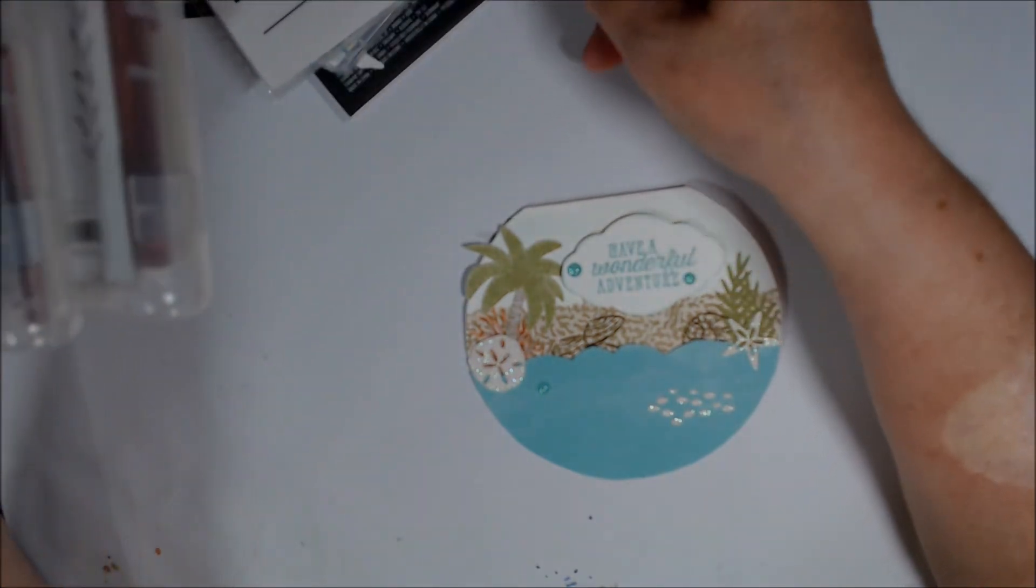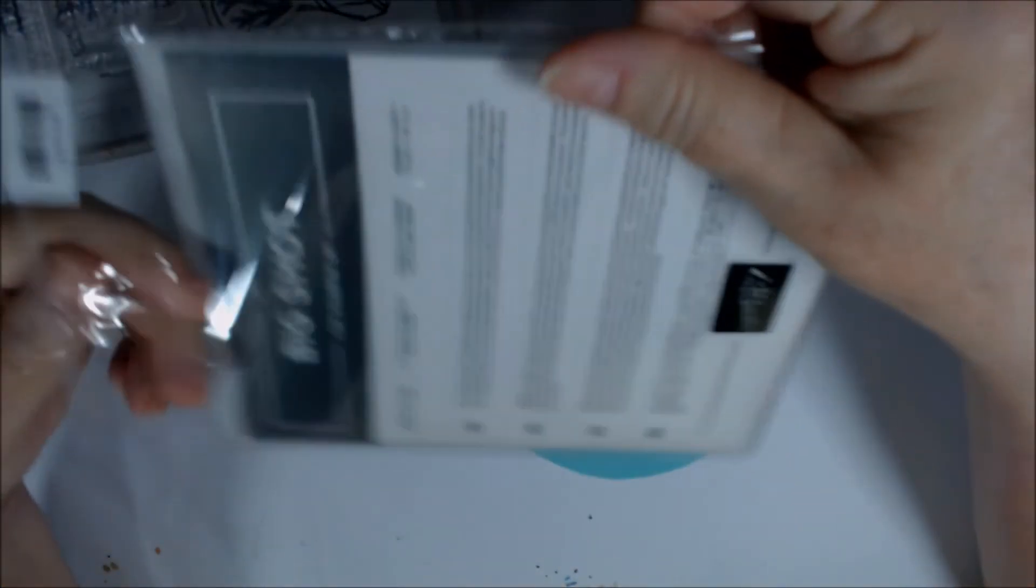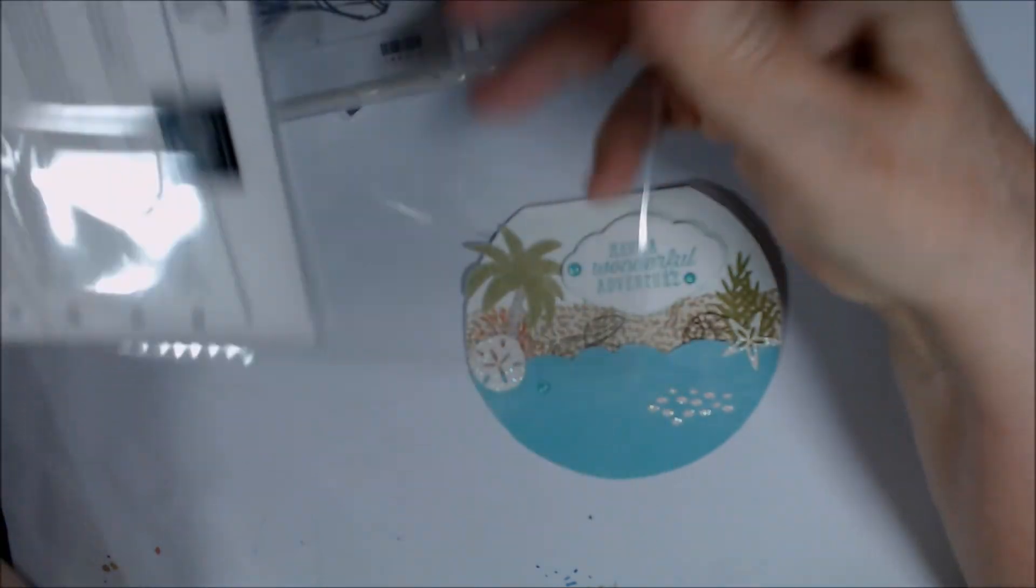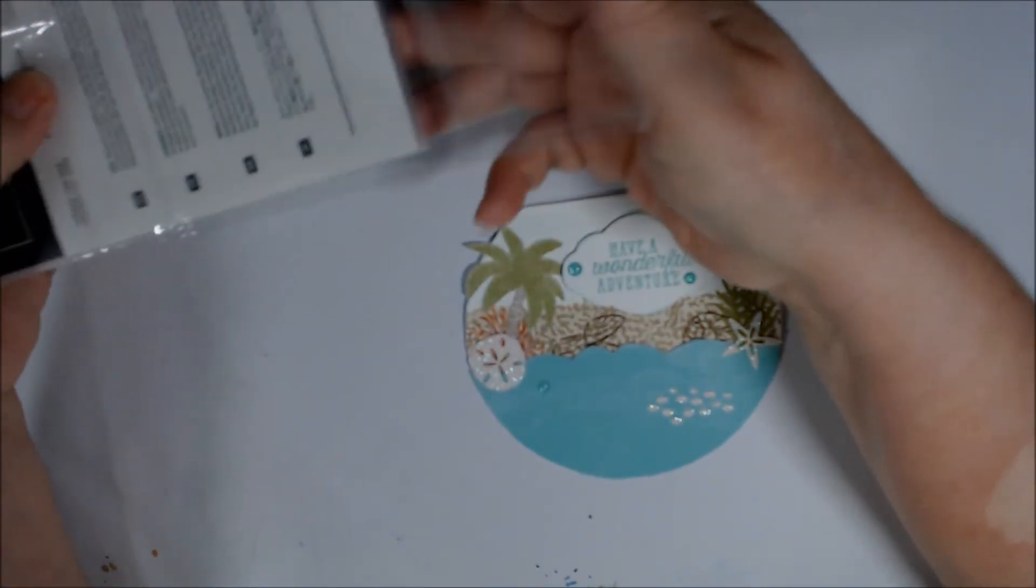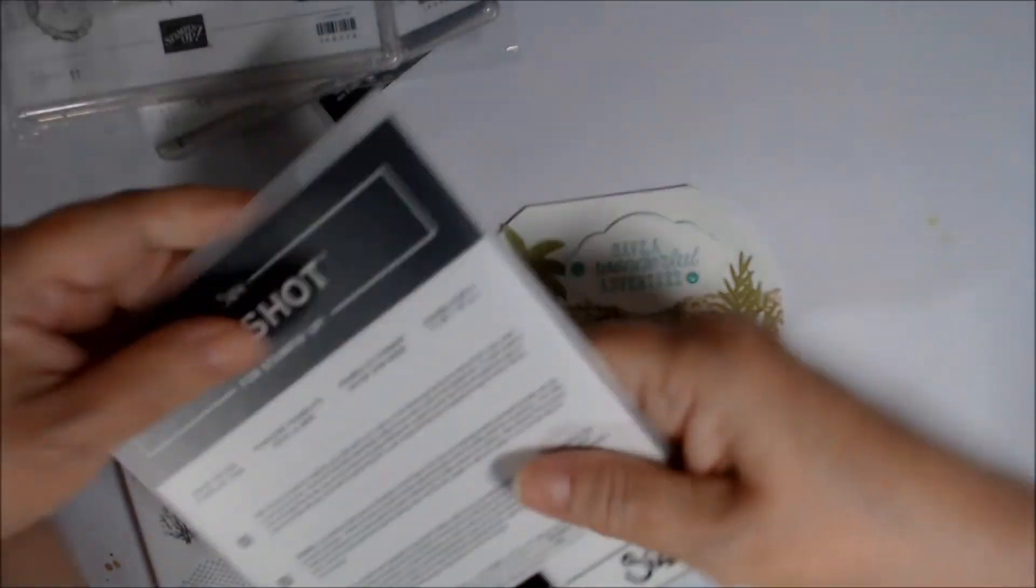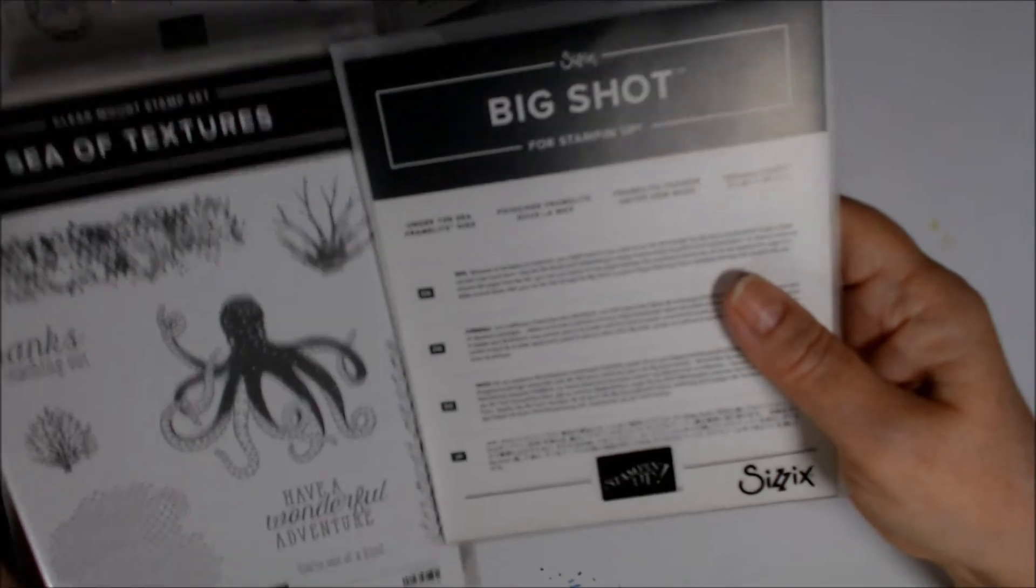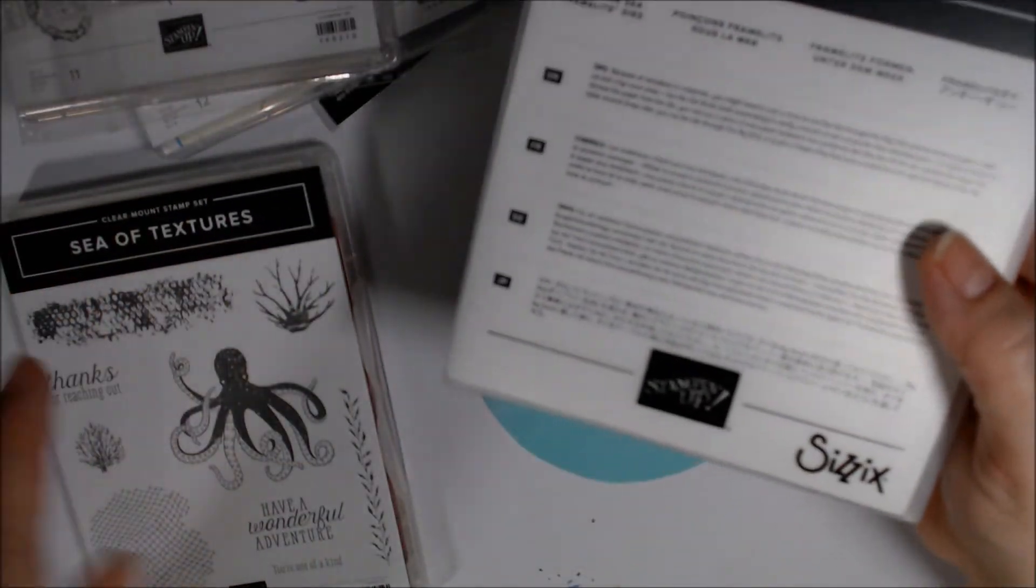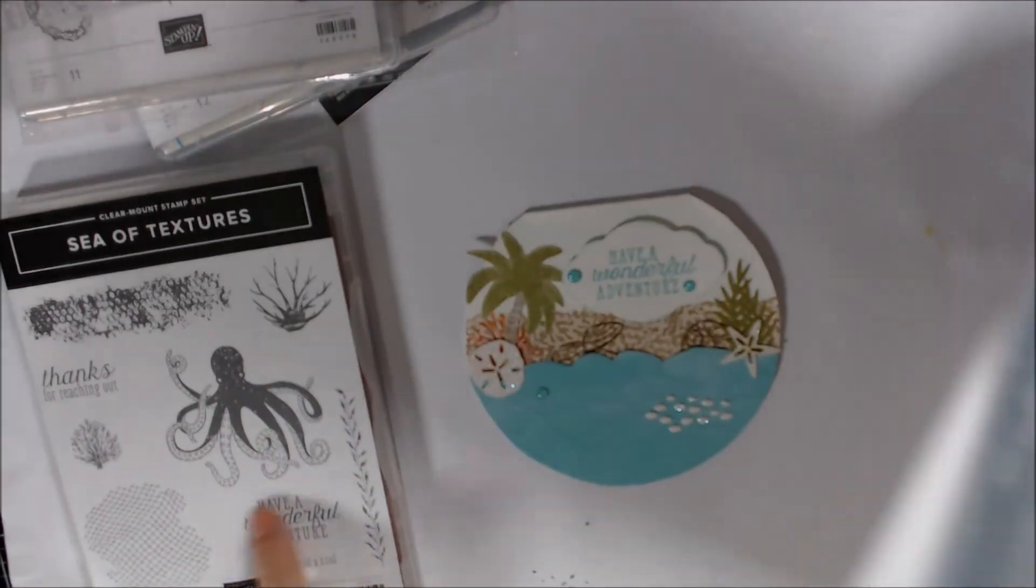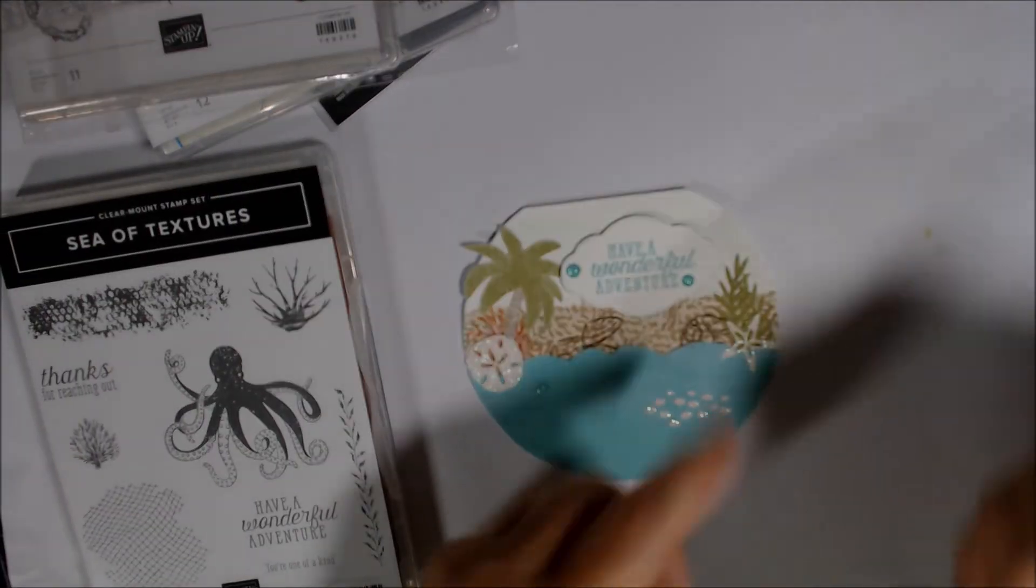And then the little fishies are out of the Under the Sea Framelits dies. Soon to be just Under the Sea dies, I guess. And that was part of the bundle last year from the Sea of Textures. I didn't really use any of these stamps. Well, I did. I used this Have a Wonderful Adventure up here.